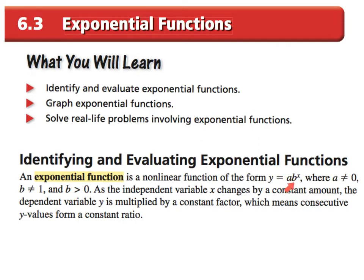b has to be greater than zero. So, for an exponential function, b has to be greater than zero — make note of that. a cannot be zero, b cannot be one, and b has to be greater than zero. So it could be like one-half, one-fourth, and such, but it cannot be one. It could be 1.2 or 1.1. As the independent x variable changes by a constant amount, the dependent variable y is multiplied by a constant factor.